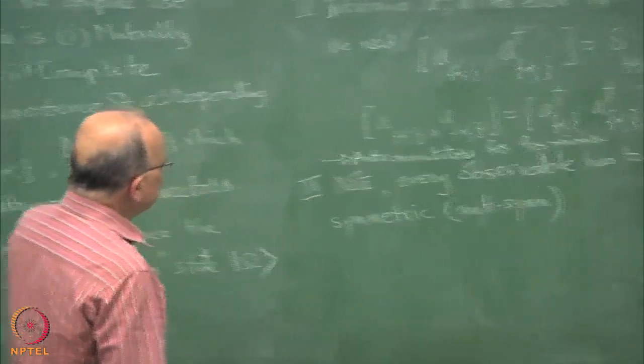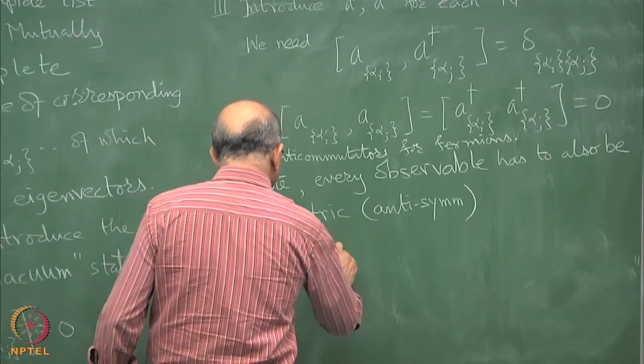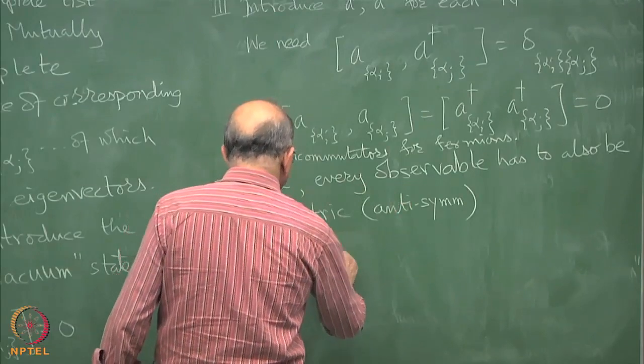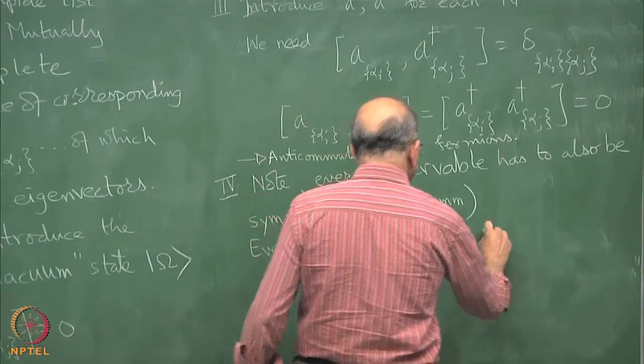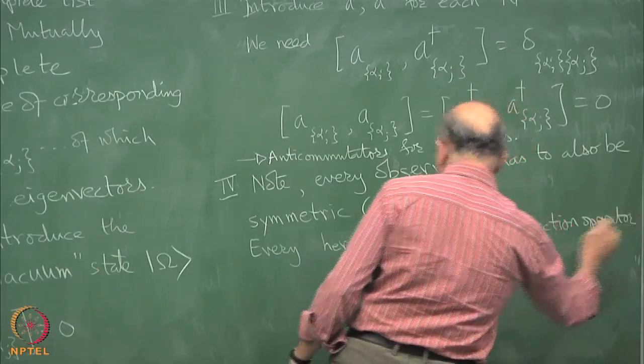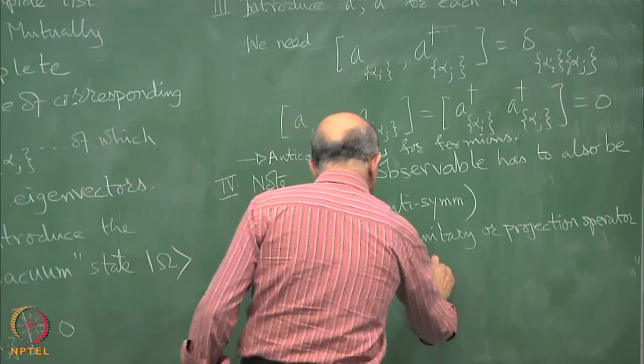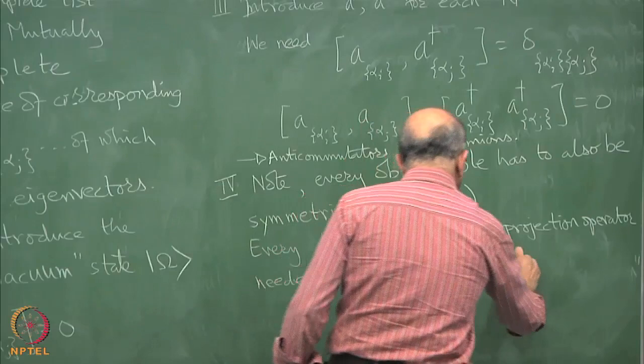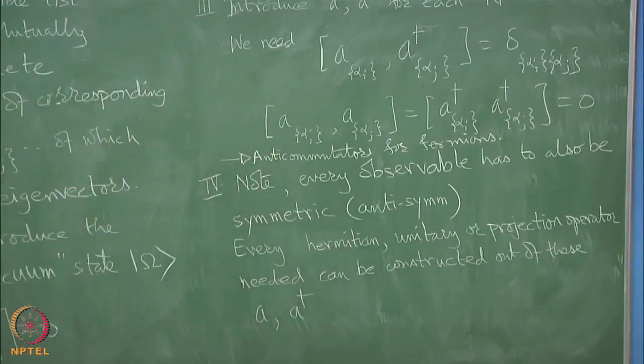The observables have to automatically be constructed out of A's and A daggers only. Thus every operator, so what does one need in life? Every Hermitian unitary or projection operator needed can be constructed out of and therefore, every calculation that you need to do in this theory can be boiled down into computing commutators or anti commutators of A's and A daggers.